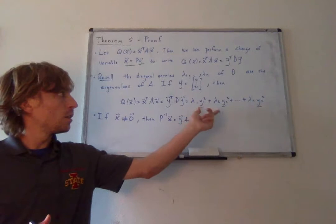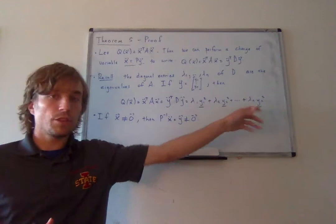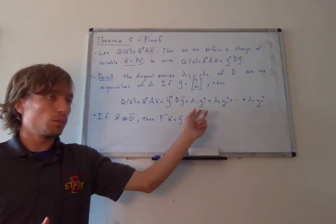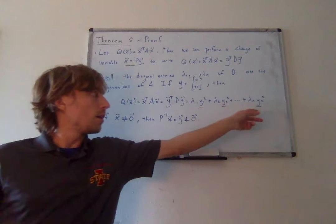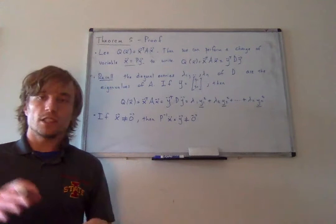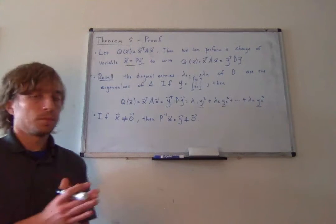For the indefinite case: if lambda 1 is positive and lambda 2 is negative, I just find a vector Y such that Y1 equals zero, Y2 equals one, and everything else is zero — the form is negative. Then I set Y1 non-zero and Y2 to zero — the form is positive. So by turning different Y values on or off, I can change the sign of the expression. That's theorem 5.